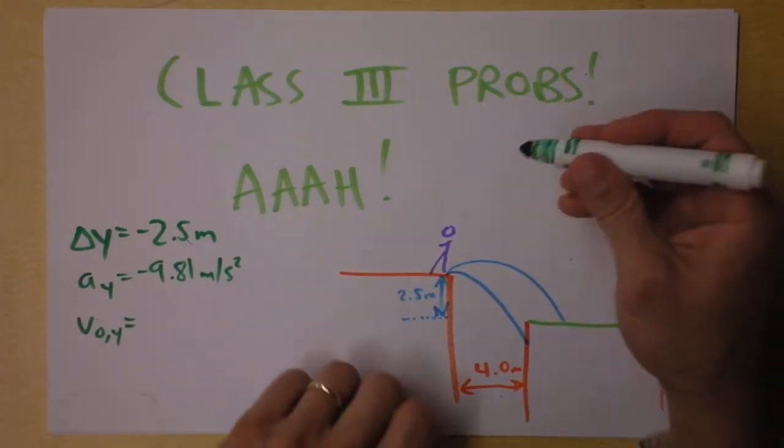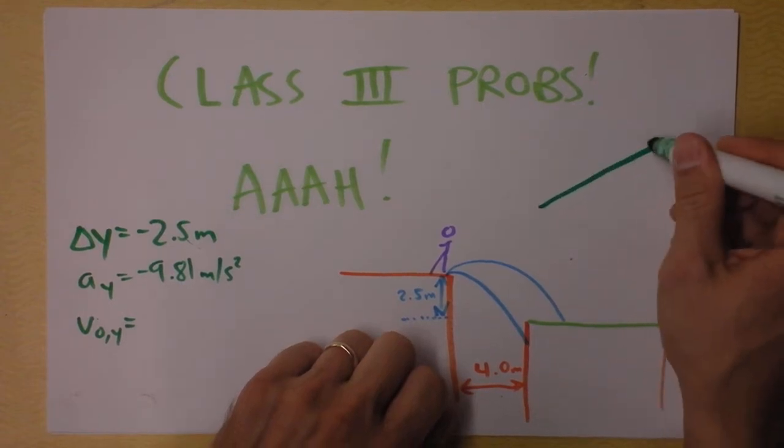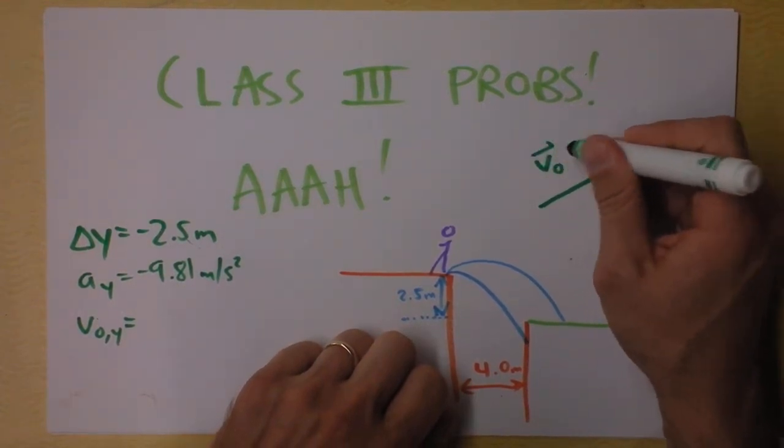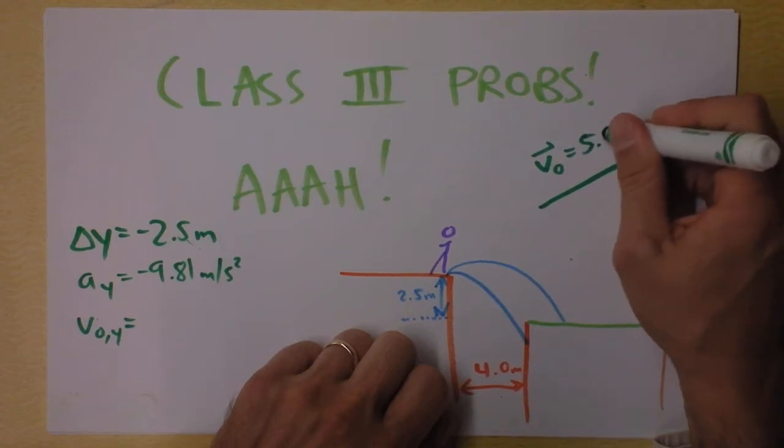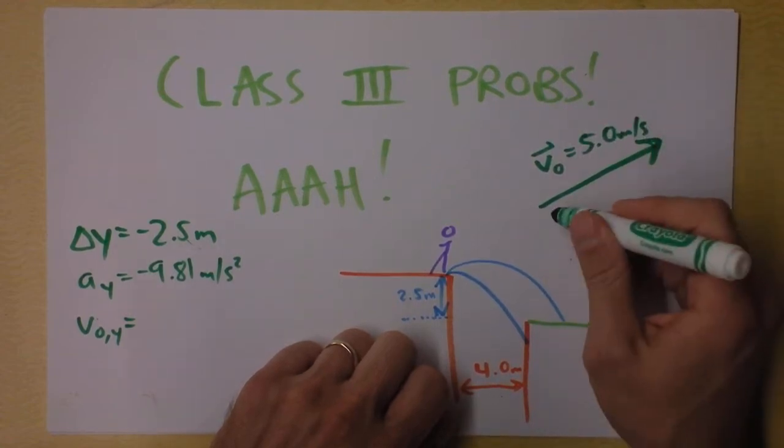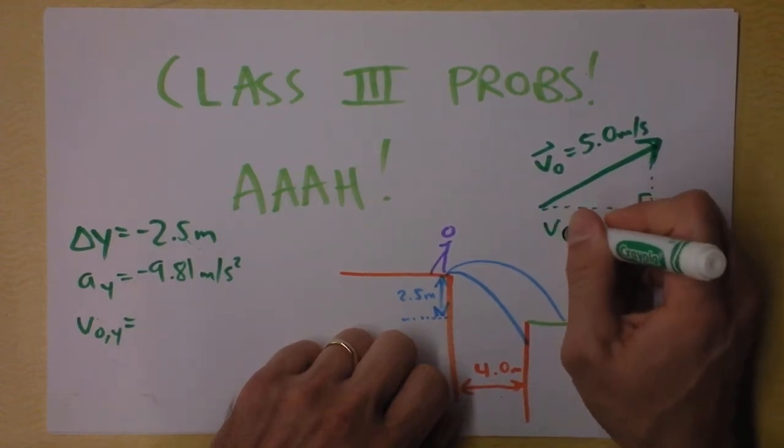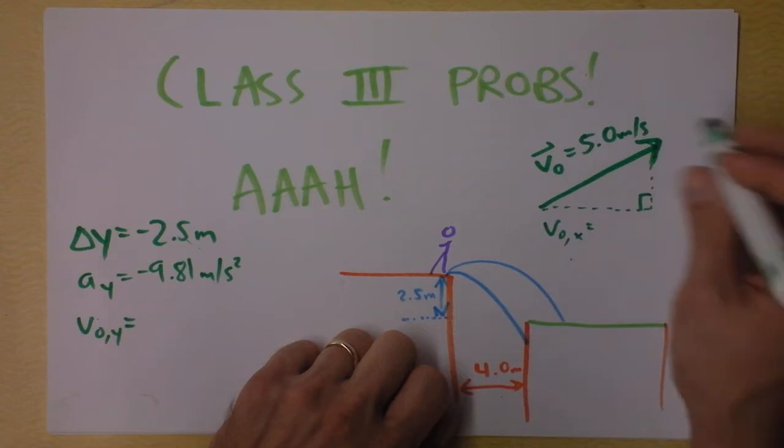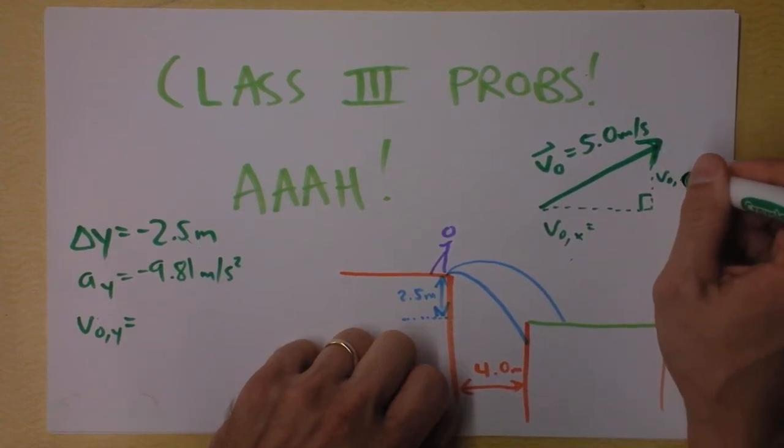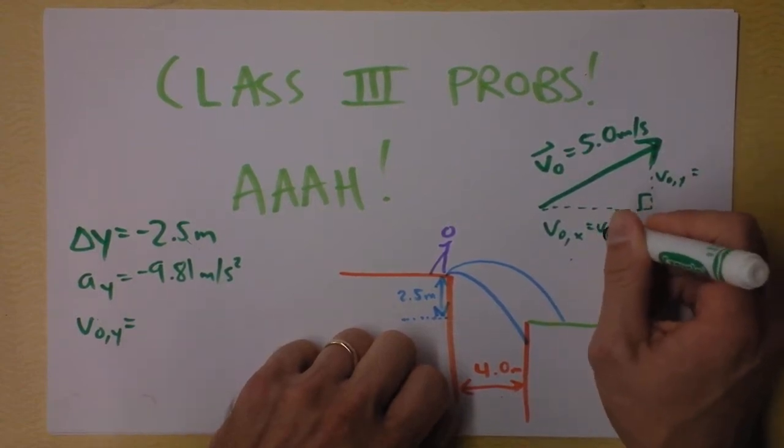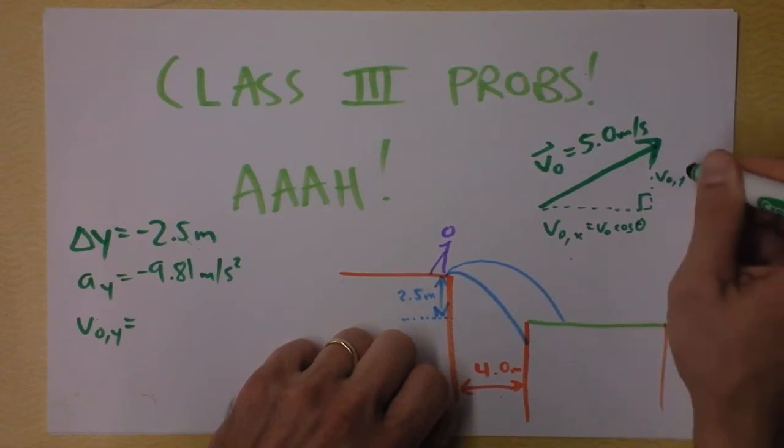we need to draw his initial velocity vector. And this velocity is the full speed, 5.0 meters per second. If we resolve this, though, we're going to be talking about the x component, which is v0x, and the y component, v0y. This is just v0 times the cosine of theta. This is v0 times the sine of theta.